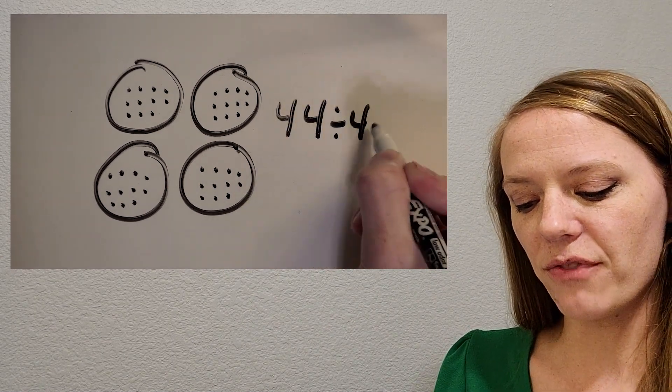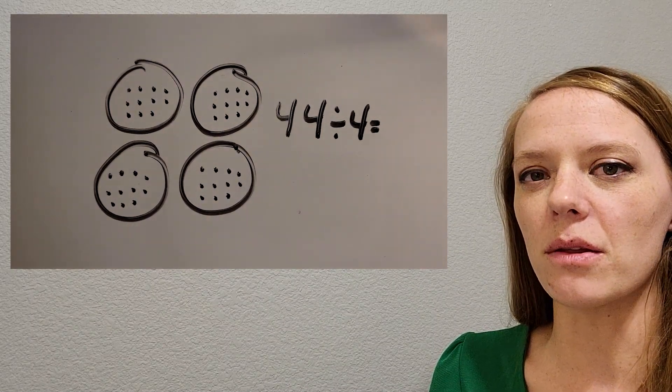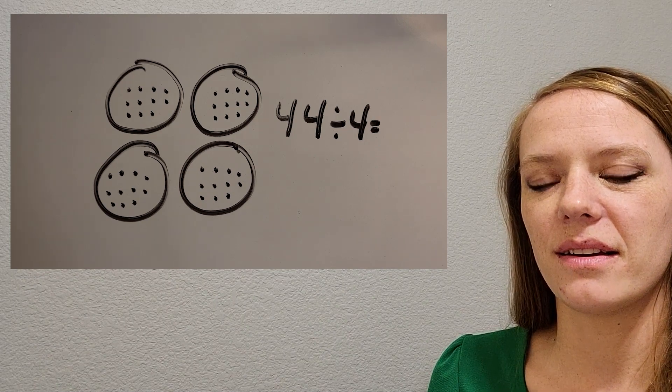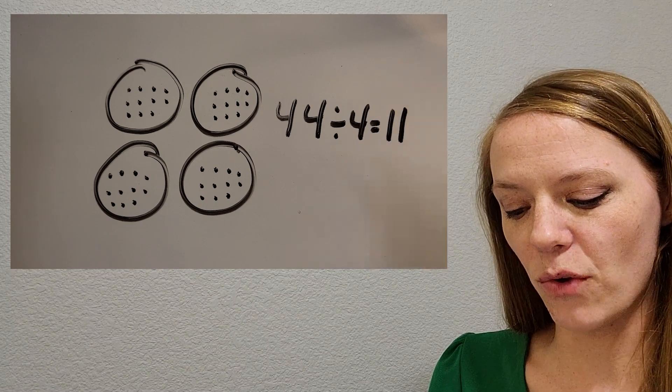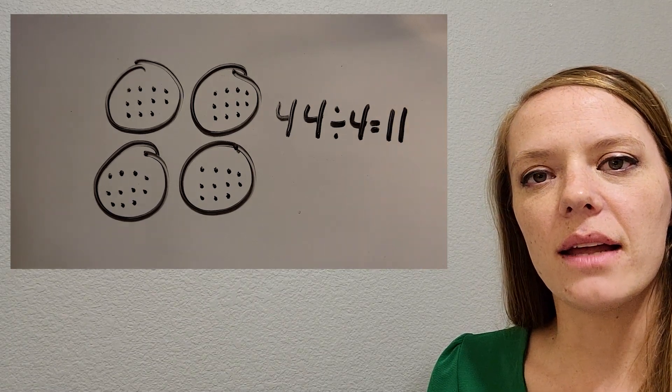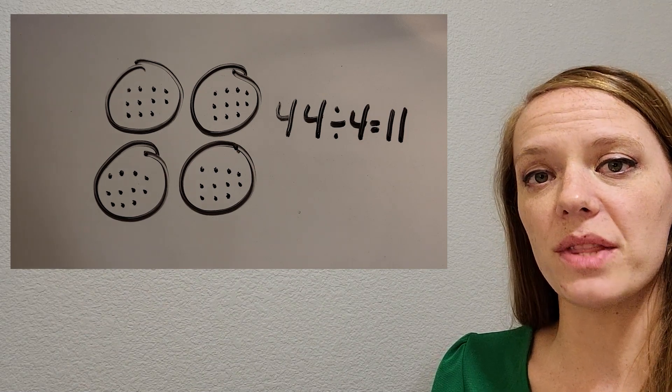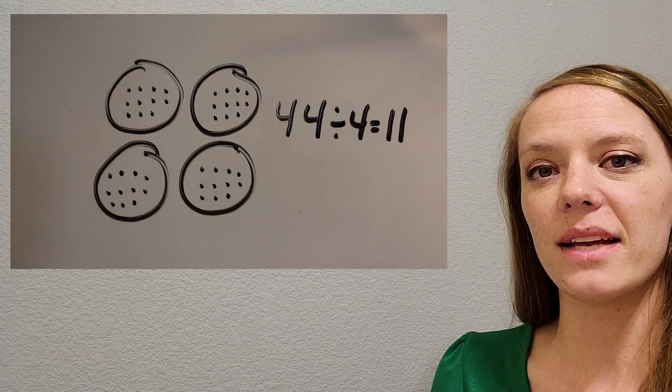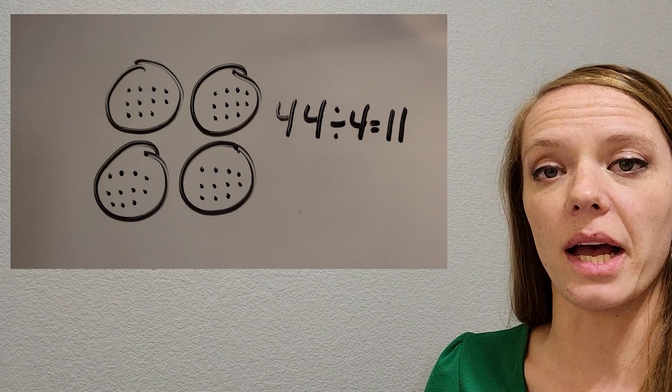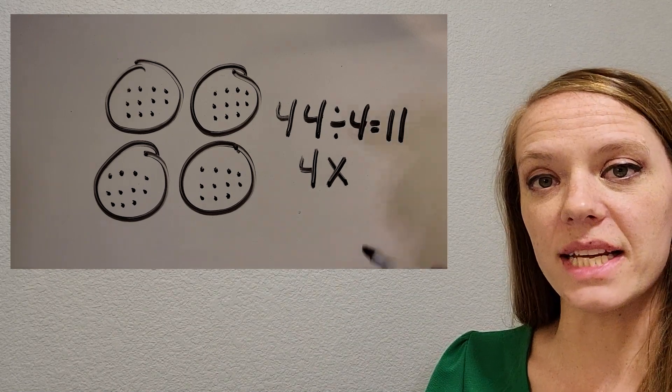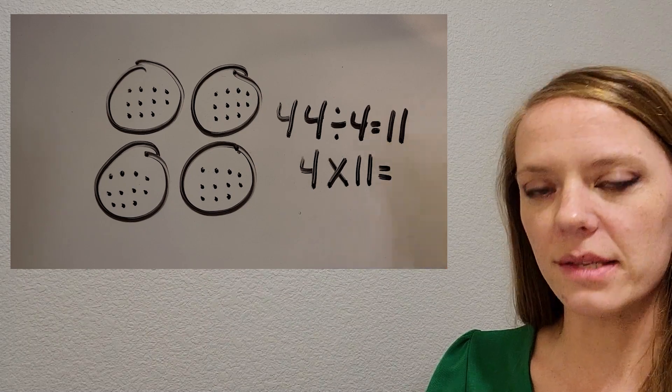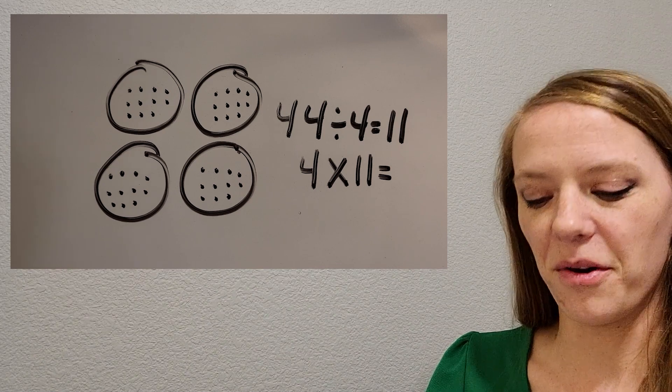Now we just have to build the problem. What division problem did we just do? Okay. You're right. 44 divided by four and let's find out what each group has in it. Count that up real quick. It might take you a little while on this one, but count them up. Okay. Did you get 11? Awesome. So 44 divided by four equals 11. And let's try to find the multiplication problem that goes with this fact family. So take a look at that picture again. I always like to look at the picture and think about what multiplication problem does that look like? Okay. Yep. It's four groups, four groups of, and then what is in each circle? 11. And then what is the total? What does that equal? All right. 44.